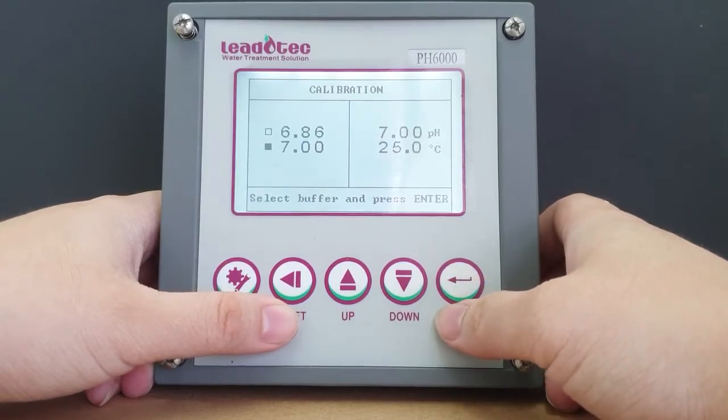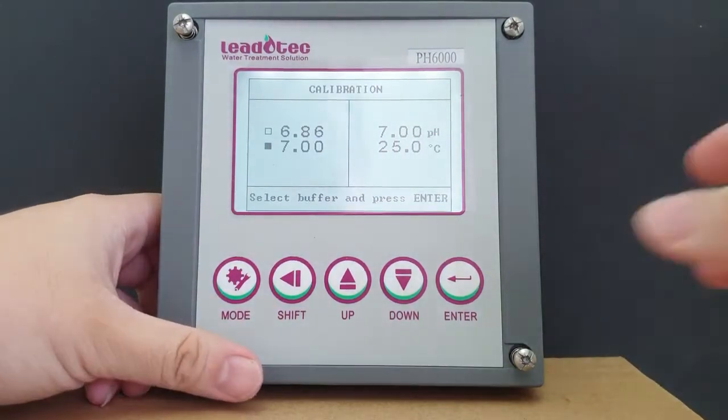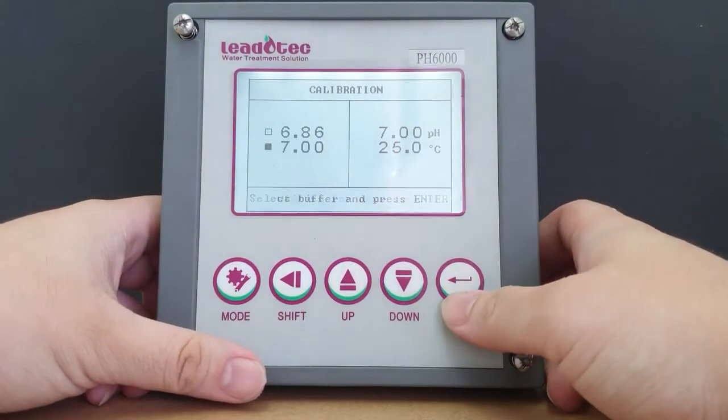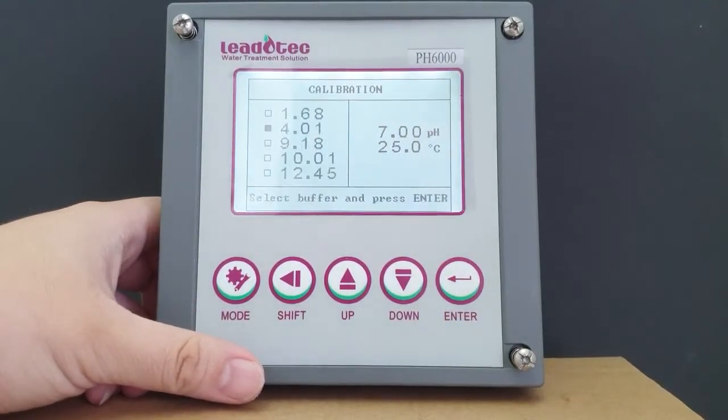So right here we have a 7.00 pH buffer and I'm going to press enter to select. Now we wait for an auto lock or you could press the enter button once the reading is stable.